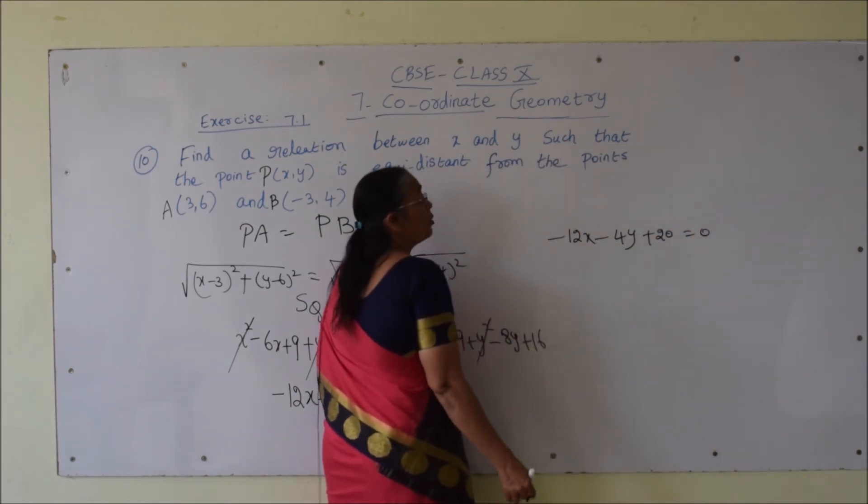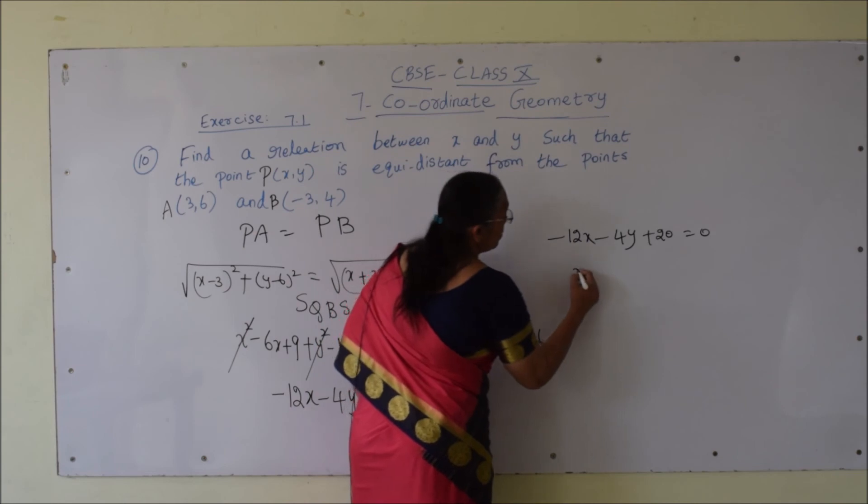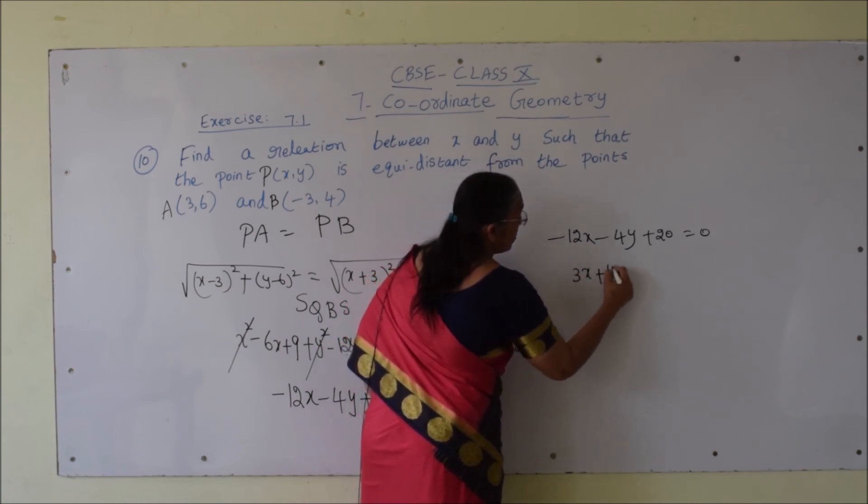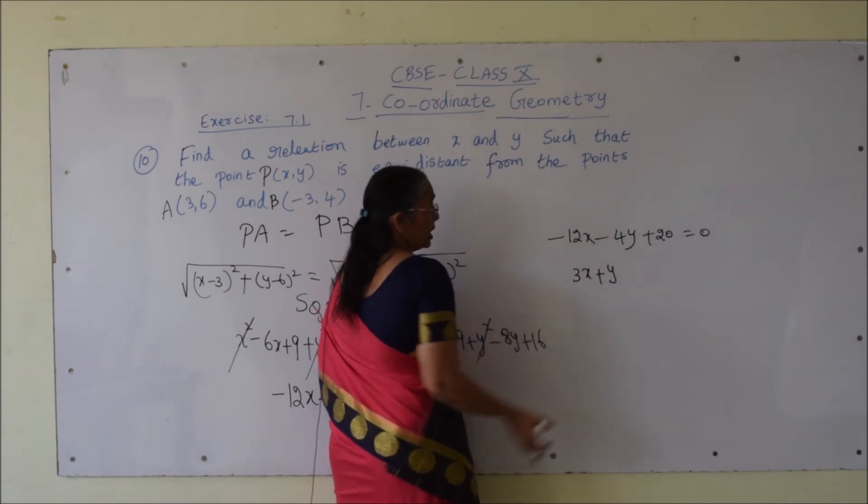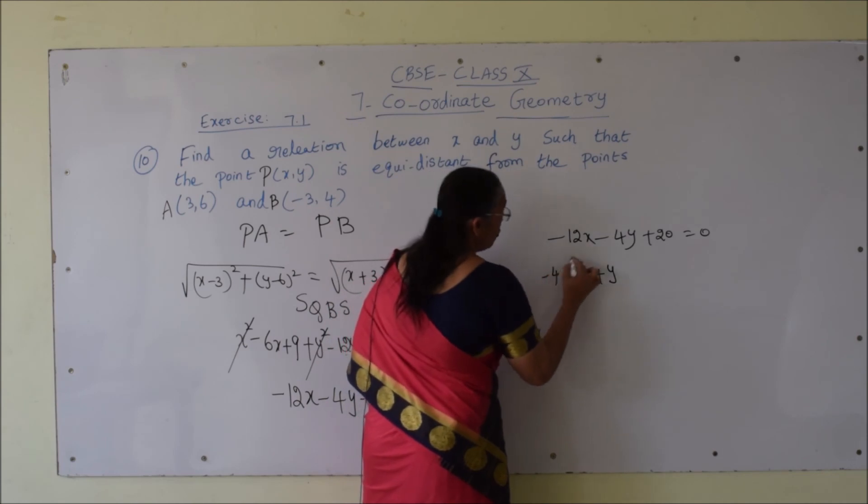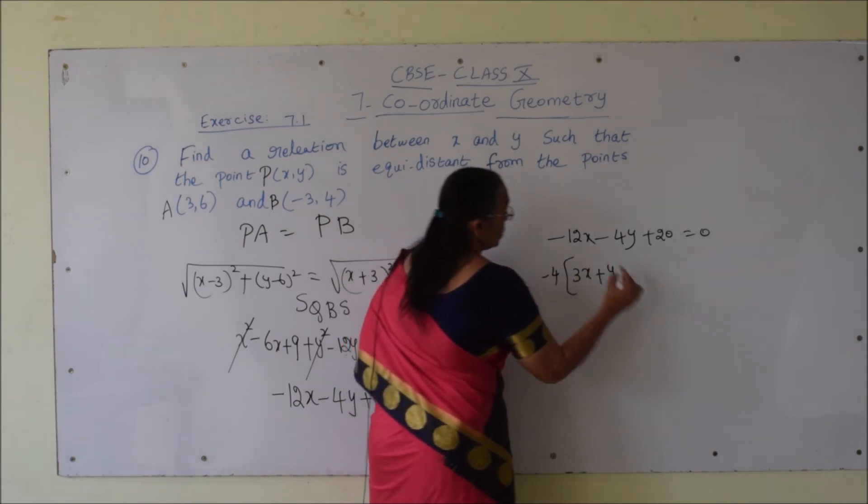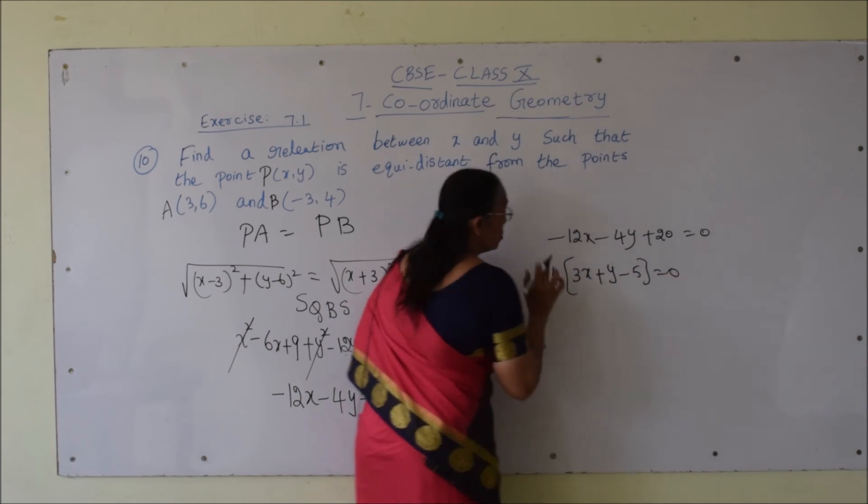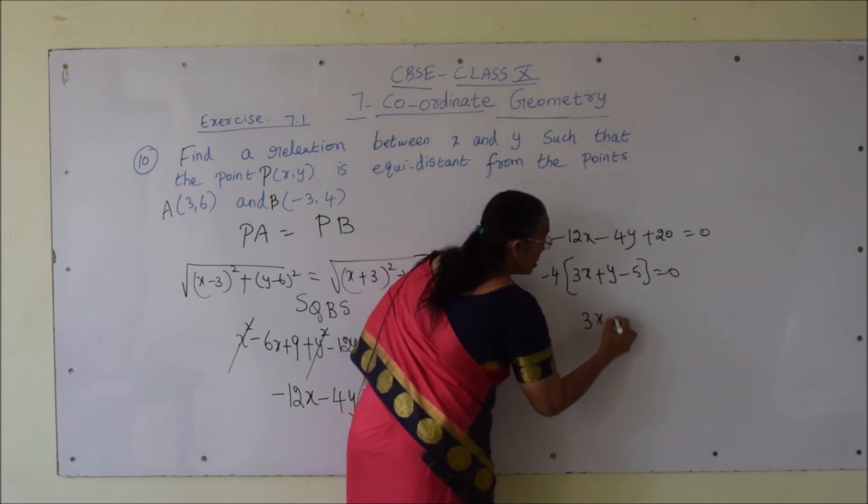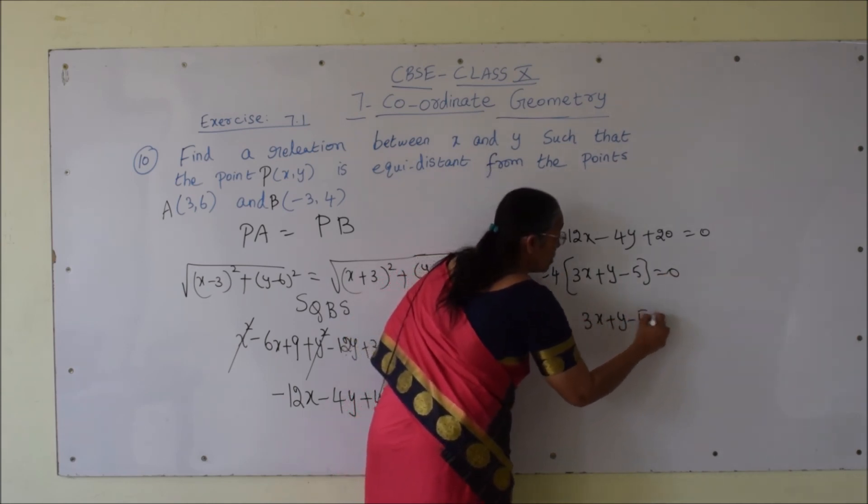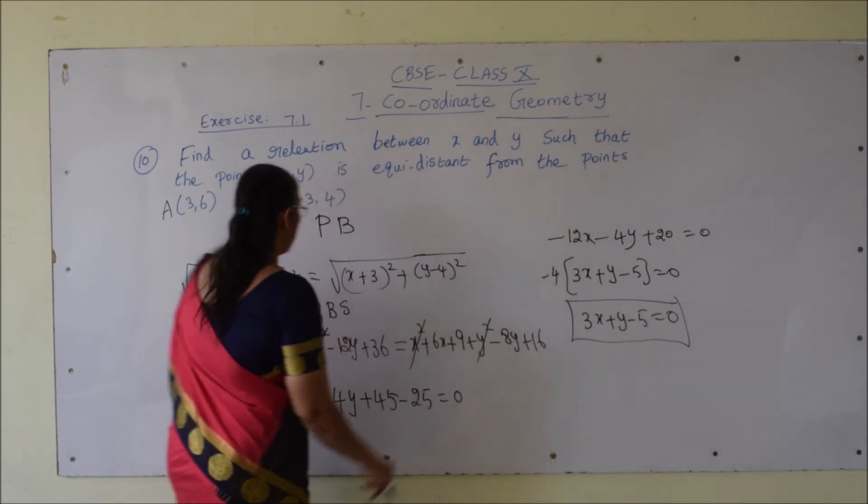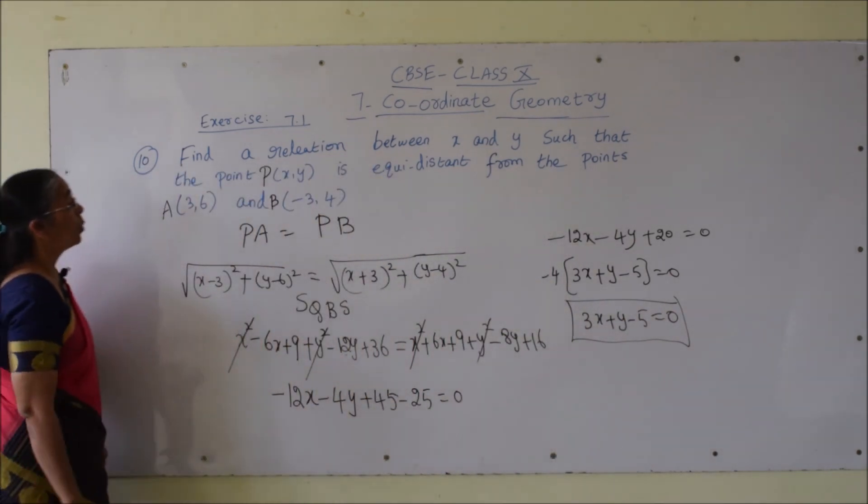Let me take negative 4 common outside. We will get 3x plus y. Negative 4 is taken outside. Negative 4 of (3x plus y minus 5) is equal to 0. Negative 4 cannot be 0, so 3x plus y minus 5 is equal to 0 is the relation between x and y.